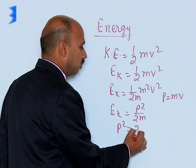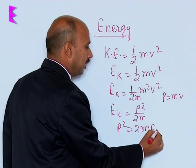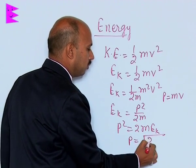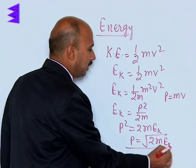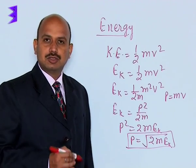P square is equal to 2m Ek and p is equal to under root of 2m Ek. So this is the relation between linear momentum and kinetic energy.